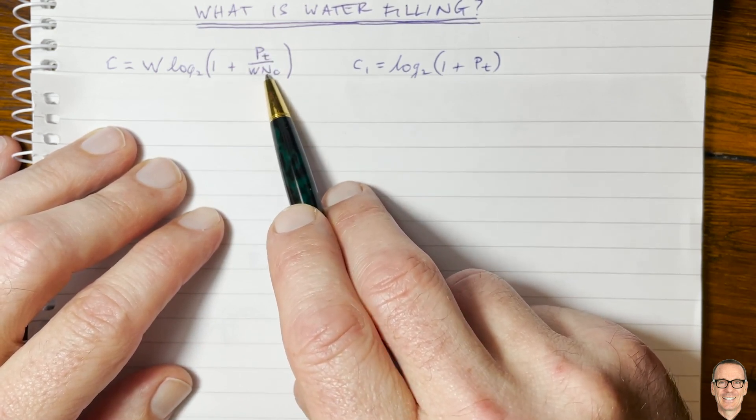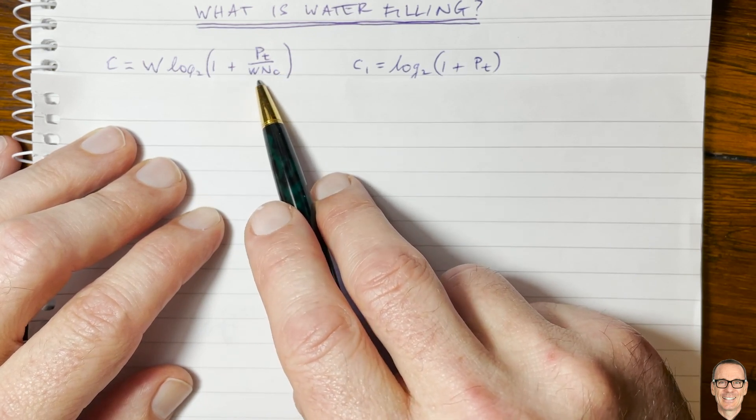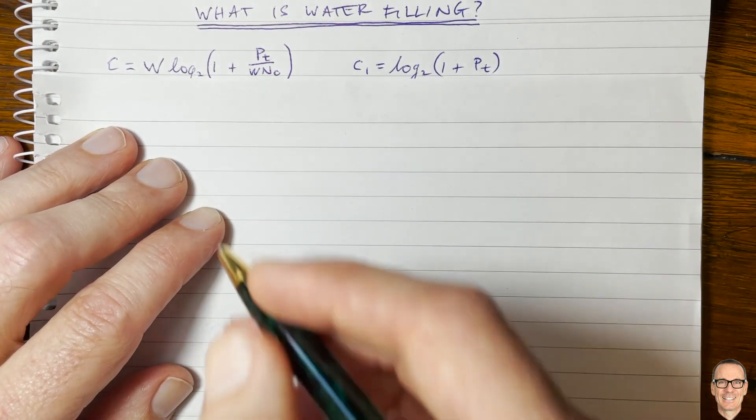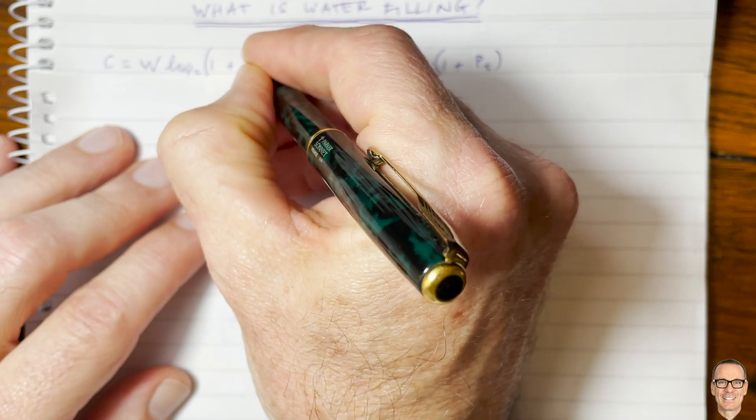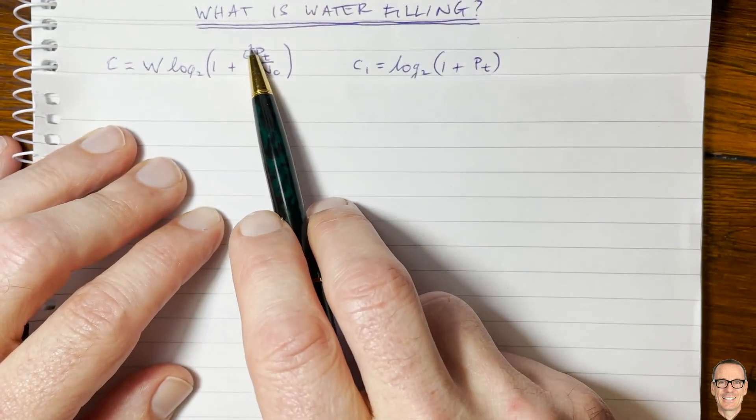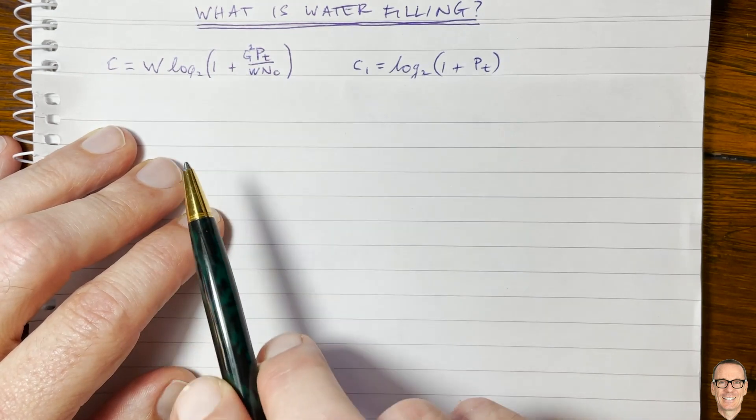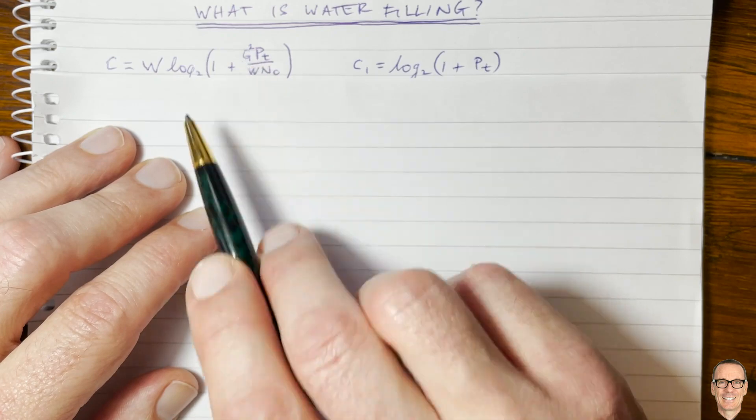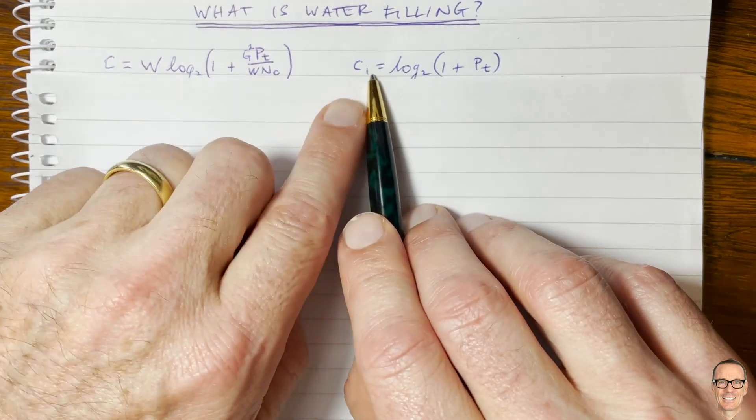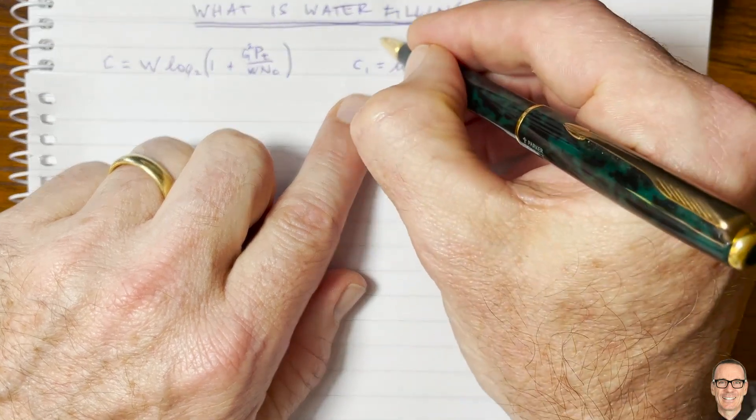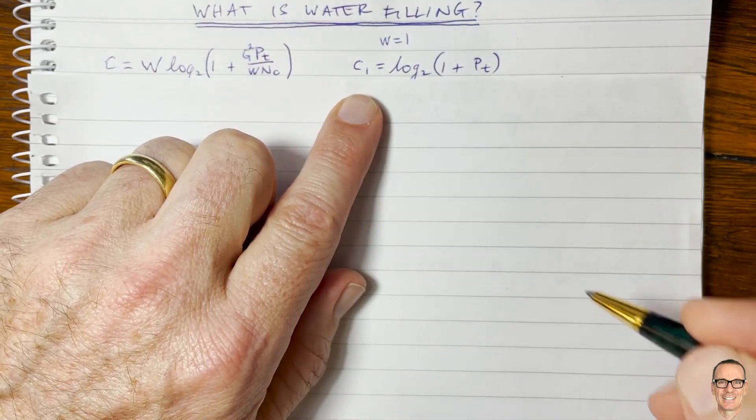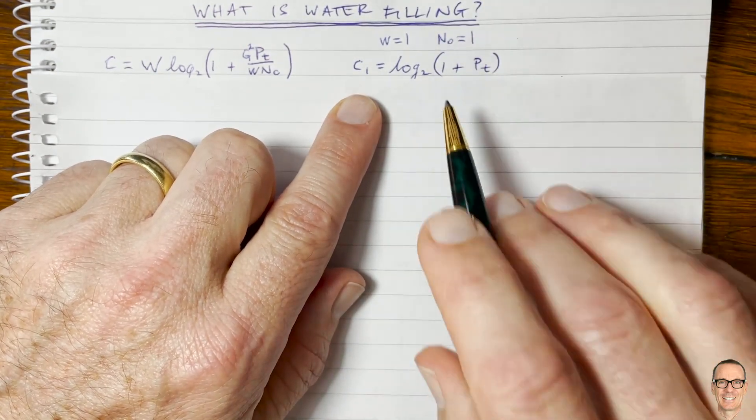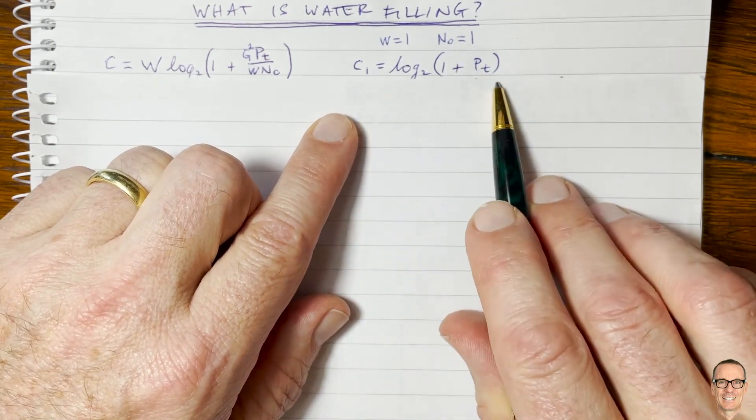Now if we have a channel that's not just additive white Gaussian noise, but actually has some attenuation, then we need to include the gain in this formula. So let me write that in here, g squared, so that's the gain squared because it's a power, and the gain is the gain on the voltage of that channel. So not all of the transmitted power makes it to the receiver. And here I've drawn what that would be in the case where w equals 1, let's just consider that for an example, the bandwidth equals 1, normalized bandwidth, and where the noise power equals 1. So we take a normalized example, and let's look at this.